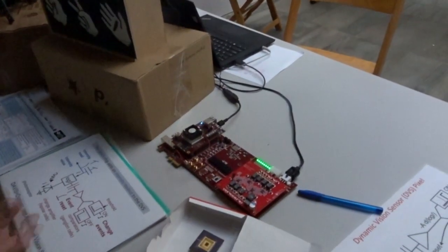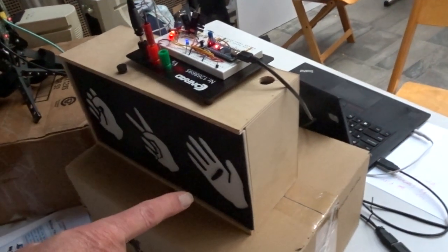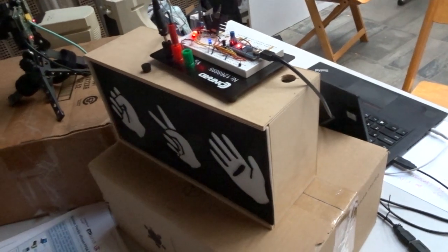And the output of this NullHop Roshambo CNN is driven, is read out over a serial port by this Arduino which then controls this light box. And this thing is programmed to win the game of Roshambo.